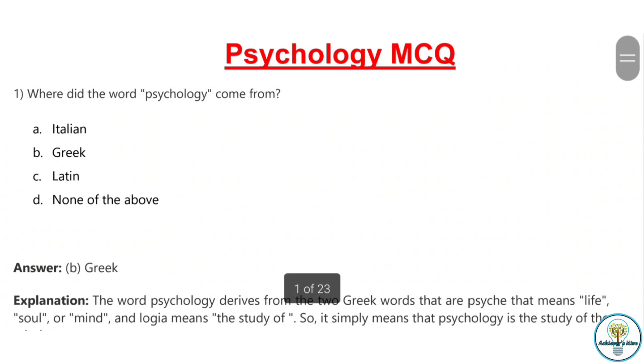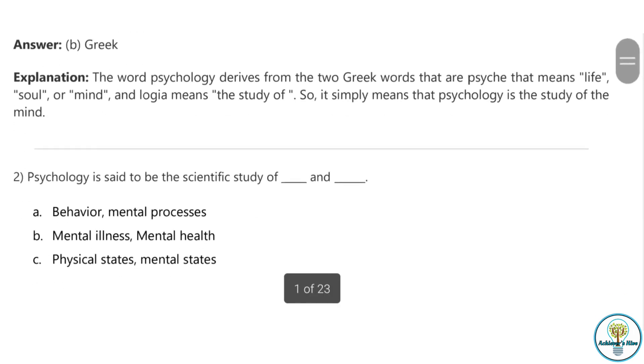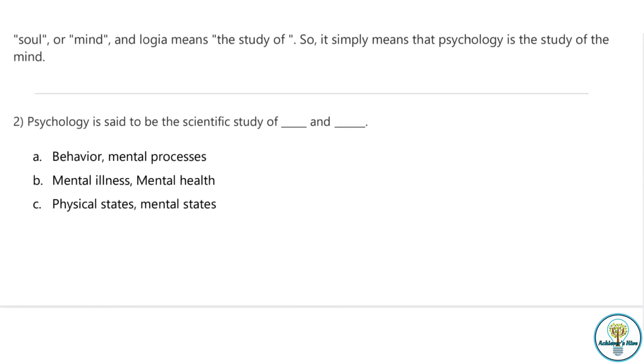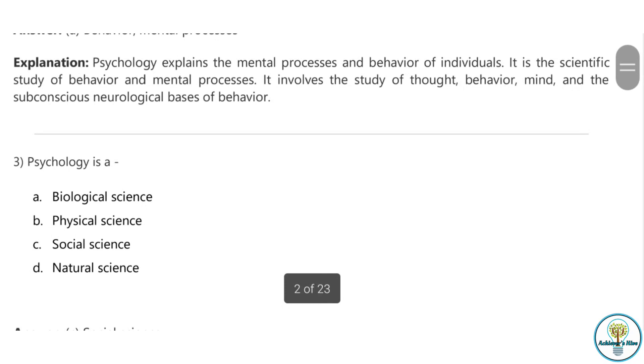Question number one: Where did the word psychology come from? There are four options given and the correct answer is Greek because the word psychology derives from two Greek words - psyche, that means life, soul, or mind, and logos or logia, that means the study of. So simply it means that psychology is the study of the mind.